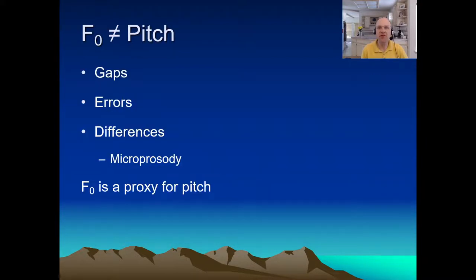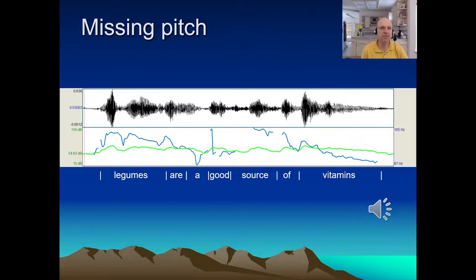Gaps, errors, and microprosodic effects. We'll cover each of these in turn. So pitch tracks now for a real sentence. Legumes are a good source of vitamins. Looking at the F0 contour, that's the blue line here. You may notice a couple gaps.